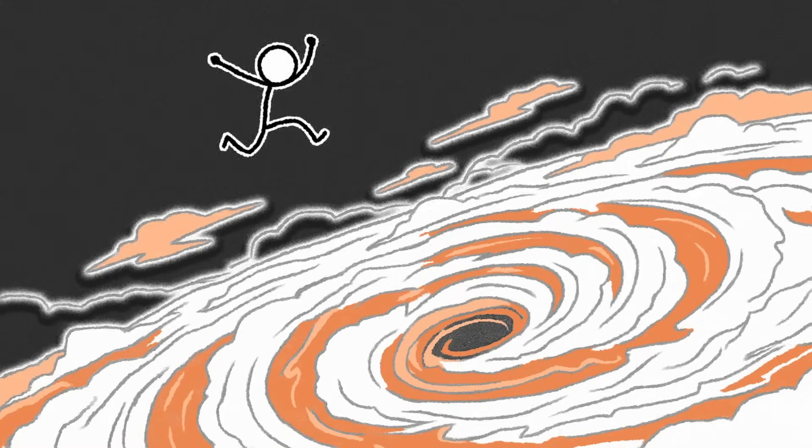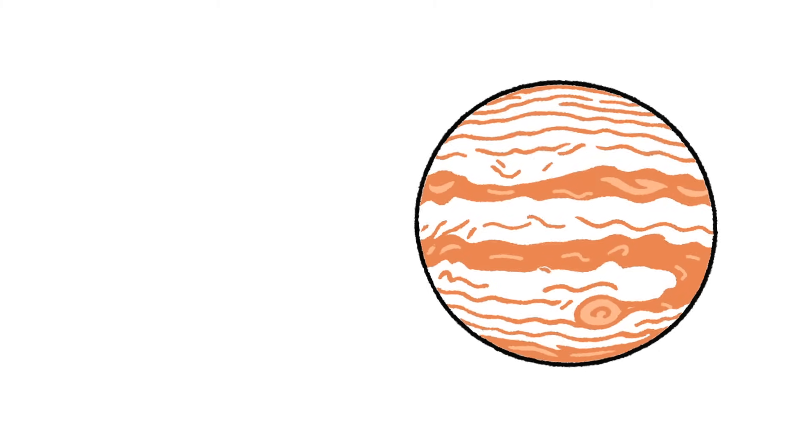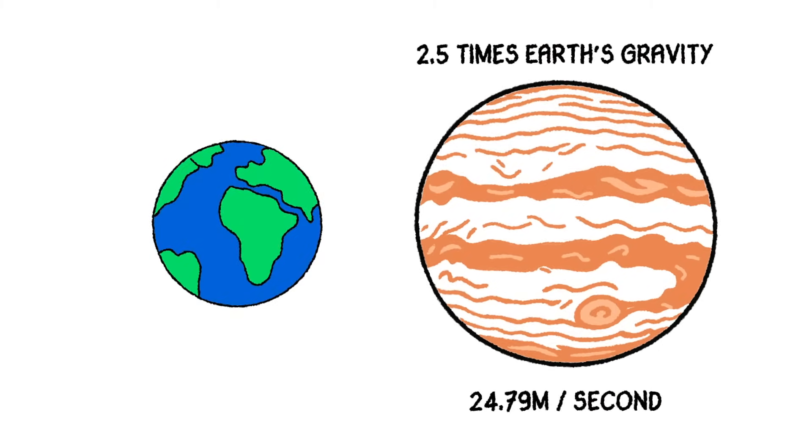Then, he jumps, and gravity grabs him like it's got something to prove. You see, Jupiter's gravity is 2.5 times stronger than Earth's. That's 24.79 meters per second squared, enough to turn a fall into a full-blown nosedive.